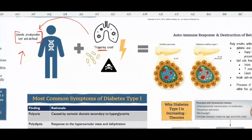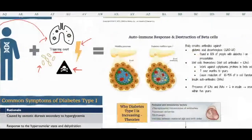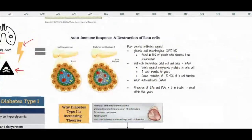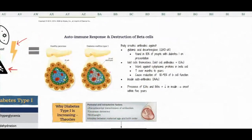So here you've got a virus, bacteria - this was supposed to mean stress - and then actually toxins, any kind of poison. Any of these could also trigger this genetic predisposition and cause the destruction of beta cells.